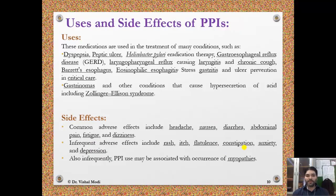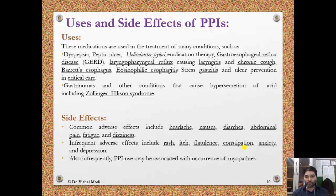Uses and side effects of proton pump inhibitors. These medications are used in the treatment of many conditions such as dyspepsia, peptic ulcer, Helicobacter pylori eradication therapy, gastroesophageal reflux disease, laryngopharyngeal reflux causing laryngitis, chronic cough, Barrett's esophagus, eosinophilic esophagitis, stress gastritis, ulcer prevention in critical care, and gastrinomas and other conditions that cause hypersecretion of acid including Zollinger-Ellison syndrome.